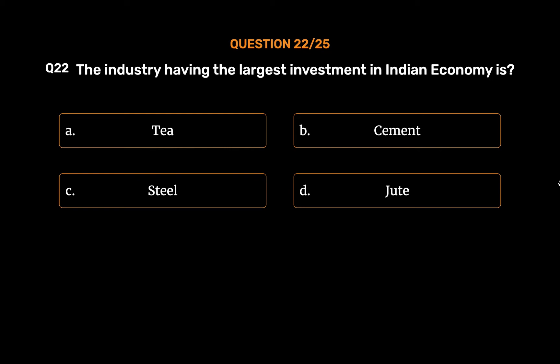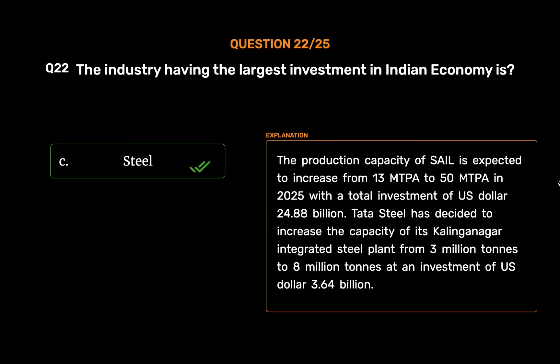The correct answer is Option C: Steel. The production capacity of steel is expected to increase from 13 MTPA to 50 MTPA in 2025 with a total investment of US$ 24.88 billion. Tata Steel has decided to increase the capacity of its Kalinganagar integrated steel plant from 3 million tons to 8 million tons at an investment of US$ 3.64 billion.